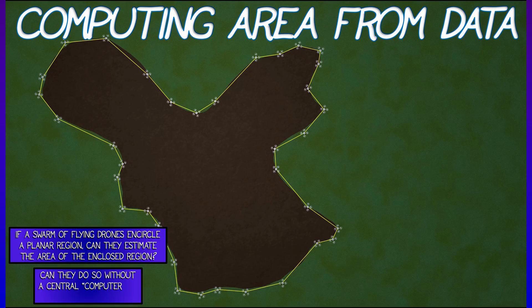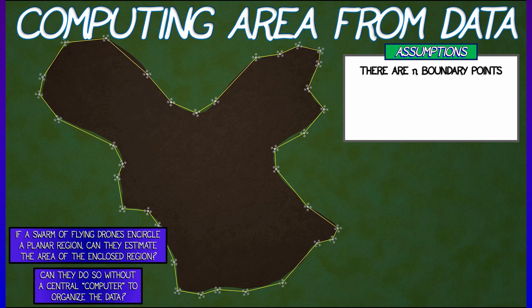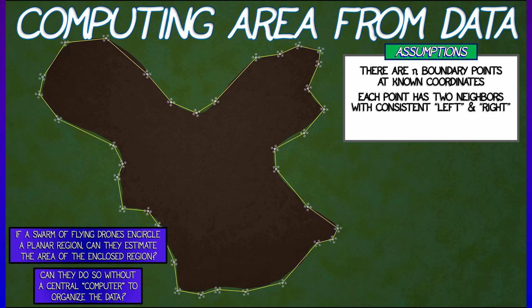The question is: can they compute that area without a central computer, without a bird's-eye view — no satellite data, no picture from above — using only local information? The assumptions are that these drones know their coordinates. We have n boundary points at known positions; they have GPS. They communicate with their neighbors and know who is to their left and right, giving a consistent orientation around the boundary that collectively bounds some planar region, call it D.